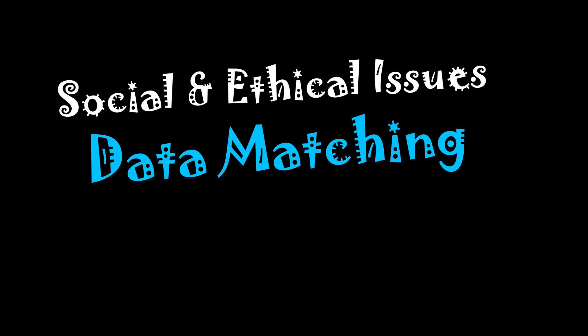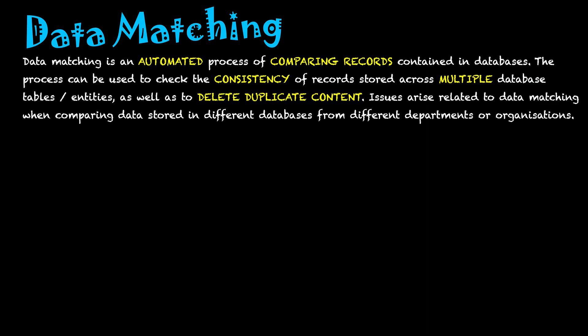Social and ethical issues: data matching. Data matching is an automated process of comparing records contained in databases. The process can be used for checking consistency of records stored across multiple database tables or entities, as well as deleting duplicate content.